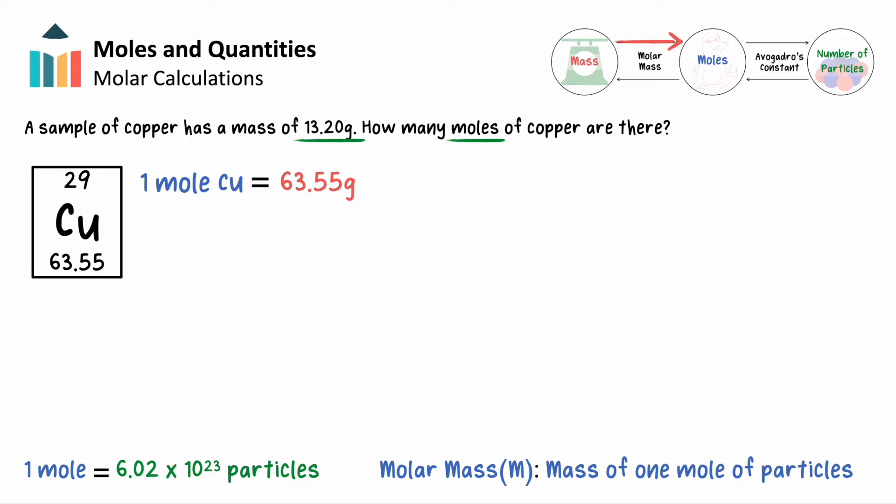We can set up our calculation by taking our sample mass and dividing it by the molar mass. If 1 mole of copper weighs 63.55 grams, then 13.20 grams of copper must contain 0.2077 moles.